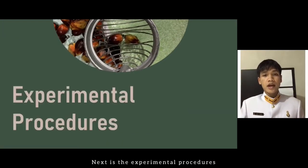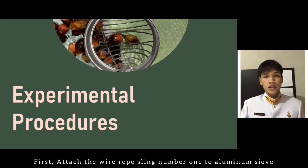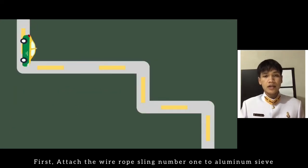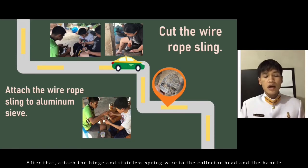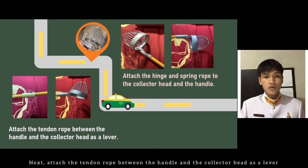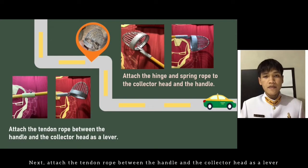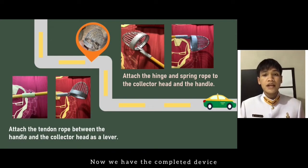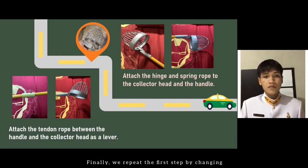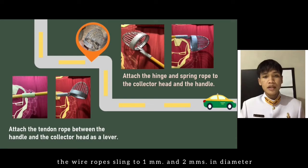Next are the experimental procedures. First, attach the wire rope sling number 1 to the aluminum sieve. After that, attach the hinge and stainless spring wire to the collector head and the handle. Next, attach the tendon rope between the handle and the collector head as the lever. Now we have the completed device. Finally, we repeat the first step by changing the wire rope sling to 1 mm and 2 mm in diameter.